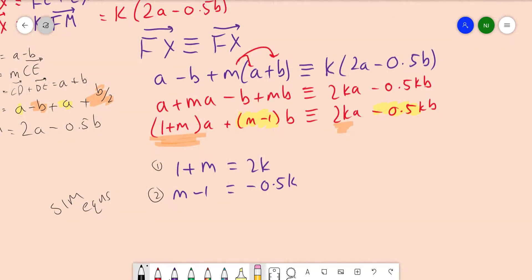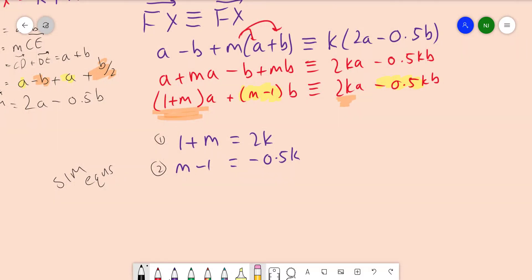1 and 2. And to solve these, well, you can use any technique we want, but we can see we have the same amount of m's. So actually, I'm going to do equation 1 minus equation 2, which is going to give me 1 minus 1, which is 2, m minus m, which cancels, 2 equals 2 minus minus 0.5, so that's 2.5k, which means that k equals 2 over 2.5, which is, and we have a calculator here, actually, but this is actually just 4 over 5.